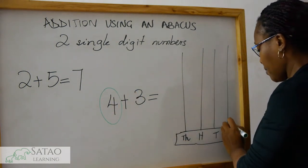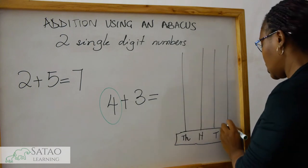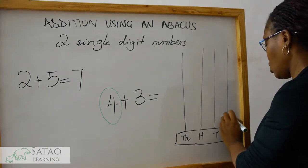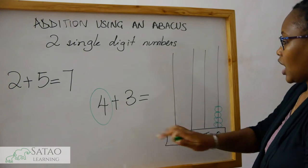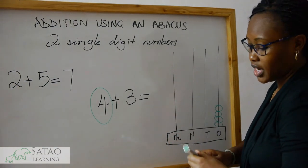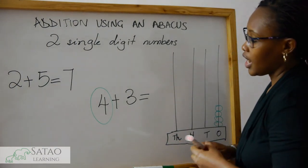On the ones column, four beads: one, two, three, four. Then we go to the next number, we add three.